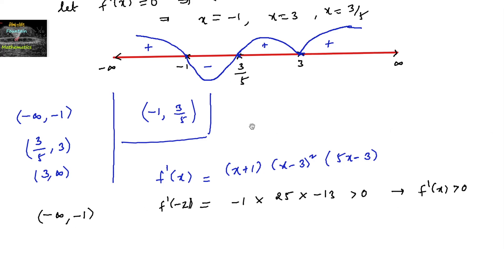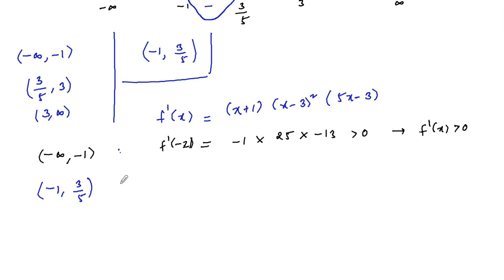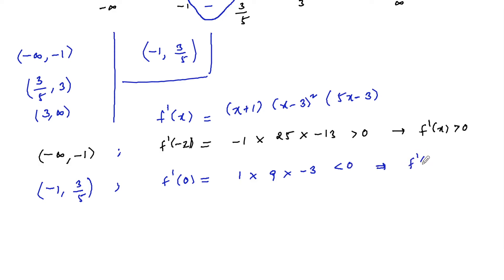In the interval (−1, 3/5), take x = 0: f'(0) = (1) · (9) · (−3) = −27, which is negative. So f'(x) < 0 in this interval, confirming the function is decreasing on (−1, 3/5).